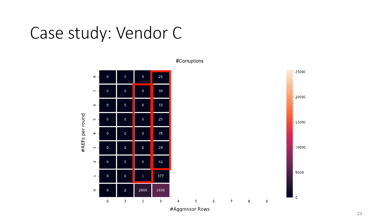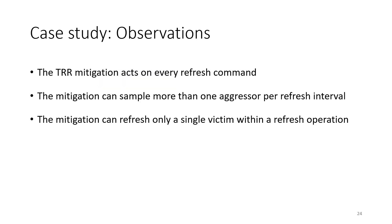Going further and increasing the number of aggressor rows, we see something interesting. For N equal to 3 aggressors, the number of bit flips decreases significantly when introducing up to 2 refreshes. However, it plateaus when the number of refresh operations equals or exceeds 3, without going down to 0. Notice that when hammering 2 and 3 rows, the plateau happens when R equals N. This leads to the observations that the mitigation can sample more than one aggressor per refresh interval, and can refresh only a single victim within a refresh operation.